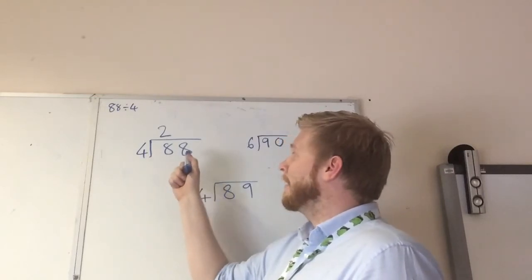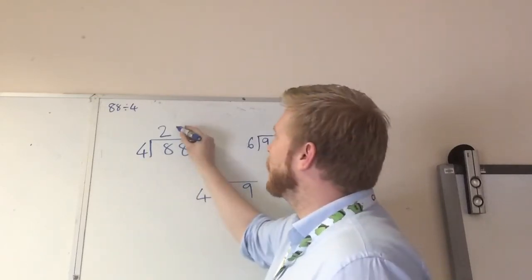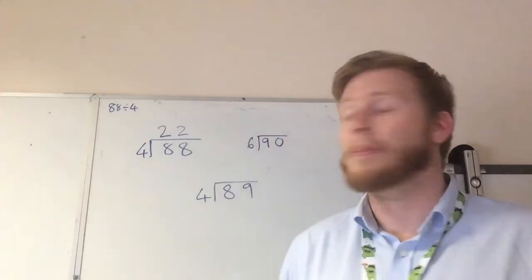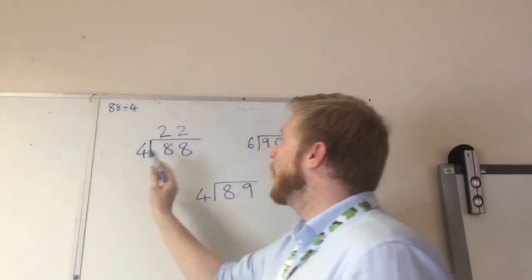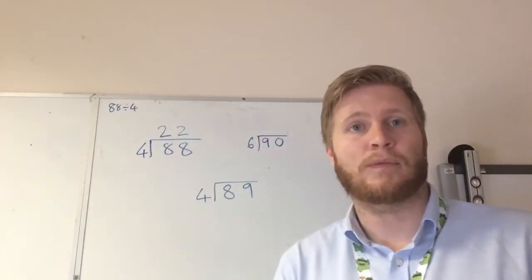4 and 8. 8 divided by 4, we already know it's 2, so we put that with 2 above. Now we know we've got 22. So 88 divided by 4 would be 22.